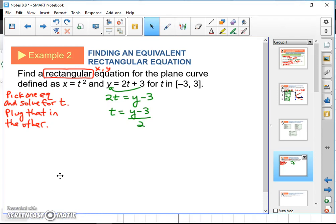We're going to take that and plug that into the other equation. So take this and put it in for T in that other equation. We would have X equals that stuff squared, Y minus 3 over 2 squared. Now remember what the goal was. We want a rectangular equation. So we want X and Y, and that's what we've got right there. We have a rectangular equation.